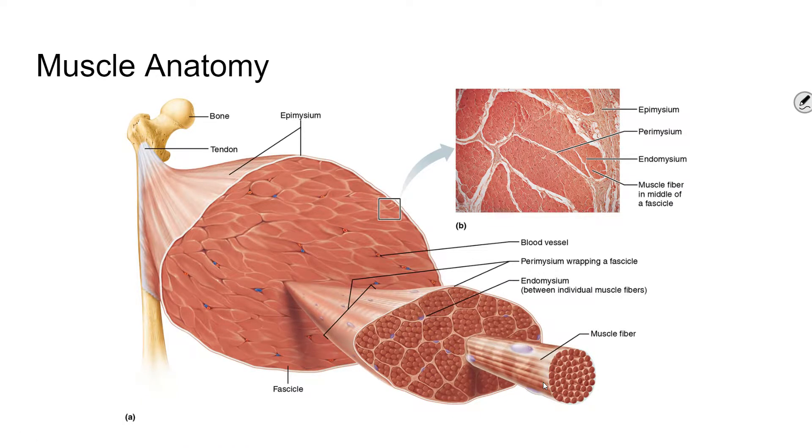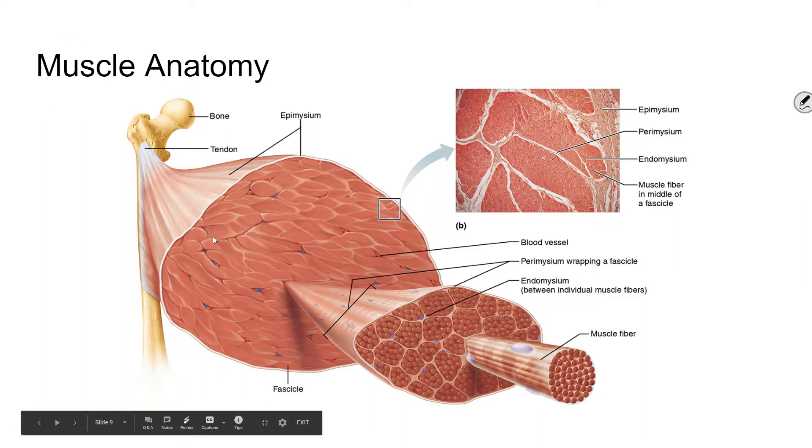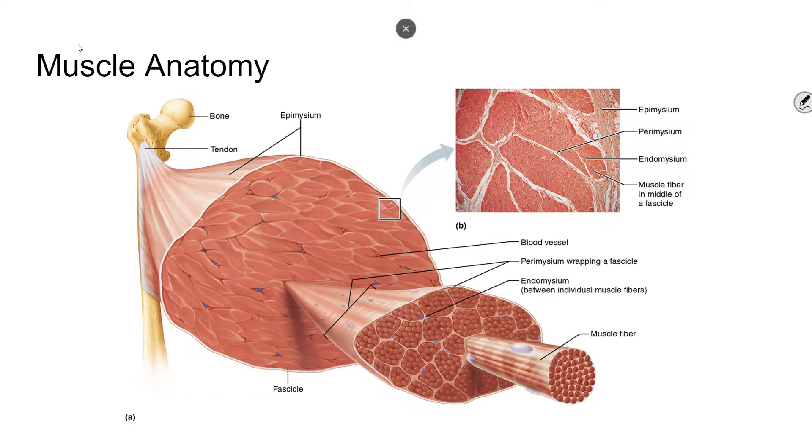And when a muscle contracts, it requires a large amount of oxygen and nutrients in order to do that. And it also needs to get rid of waste products that are produced in that contraction very quickly. And so muscles, as you can see, lots of blood flow in muscles to get rid of waste and to bring oxygen to the muscles.